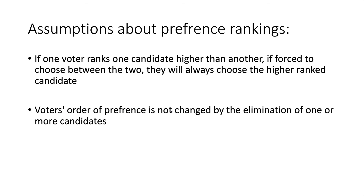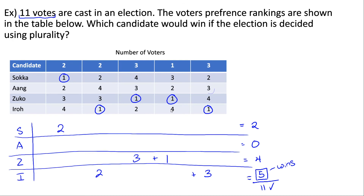The second assumption — that voters' order of preference is not changed by the elimination of candidates — means that if, say, there's a runoff and these two voters' first choice is eliminated, they won't reorder their preferences. They will still prefer Aang over Zuko and Zuko over Iro. They won't decide out of spite to make someone else their new top choice. Their preference order stays exactly as it is.